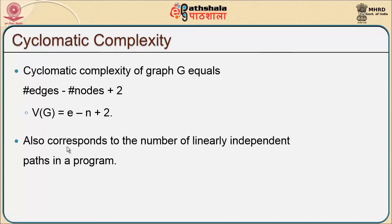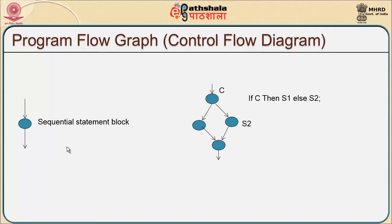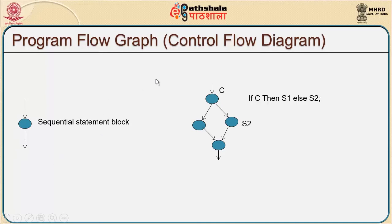We will look at a flow graph or control flow diagram to understand cyclomatic complexity in detail. When I describe a node, this node has two edges — one which comes inside and one which moves outside — making it a sequential statement block. Any number of nodes that take one input and leave one output form a sequential block. However, if I have one edge coming in but have to take a decision, two edges emerge out of a single node.